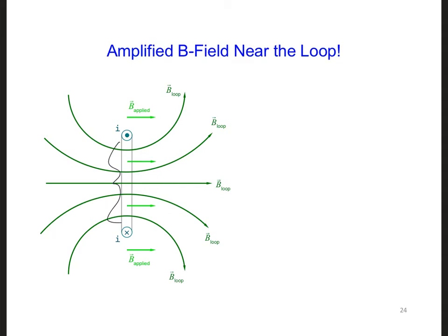As a result, the total B field in the vicinity of the loop for this orientation of the loop is B applied, which is the light green, plus B loop, meaning that the total B field here in the vicinity in the middle of the loop is greater than B applied.